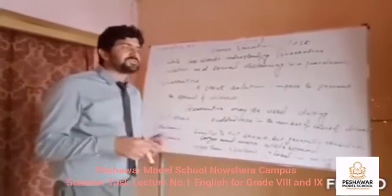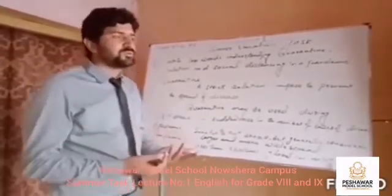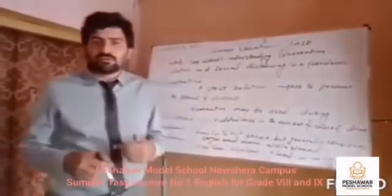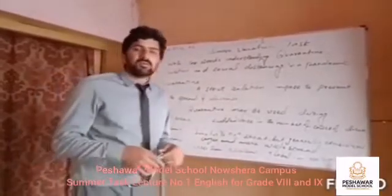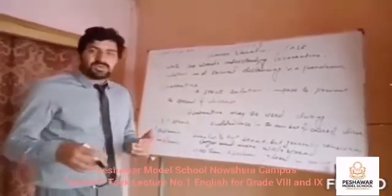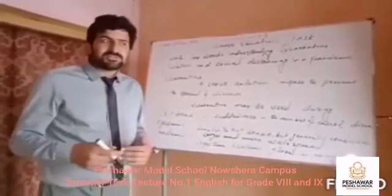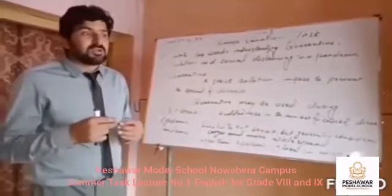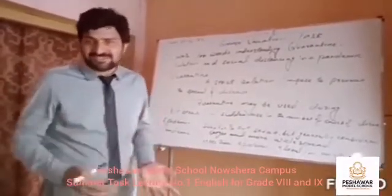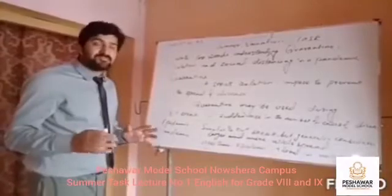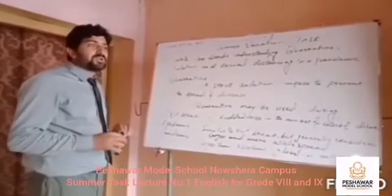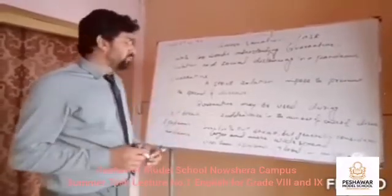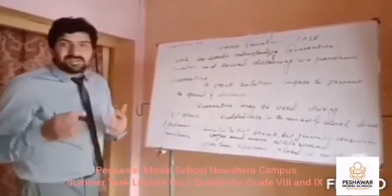Why do we use quarantine, or why does the government use quarantine? The government uses quarantine to stop the spread of contagious diseases. Quarantines are for people who don't have symptoms but are near to exposing the sickness. A quarantine keeps them away from the people who are infected.